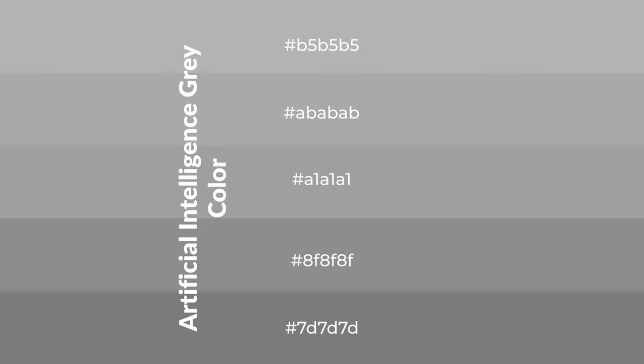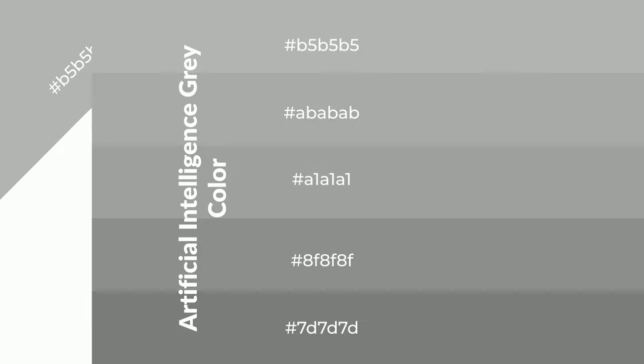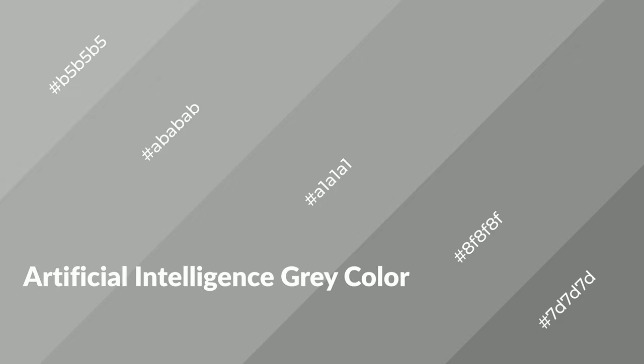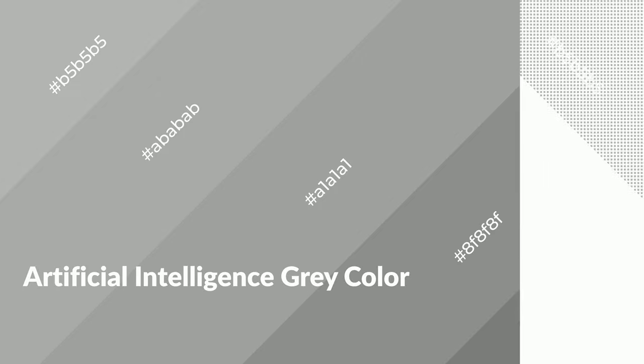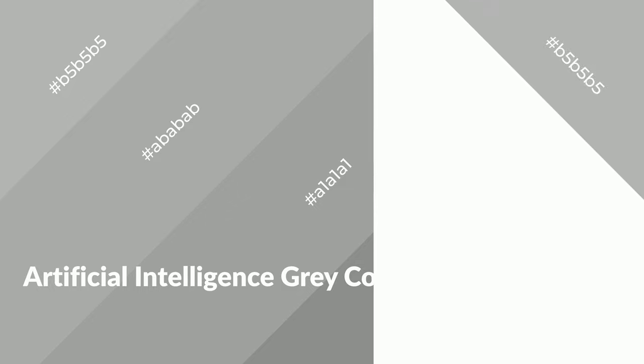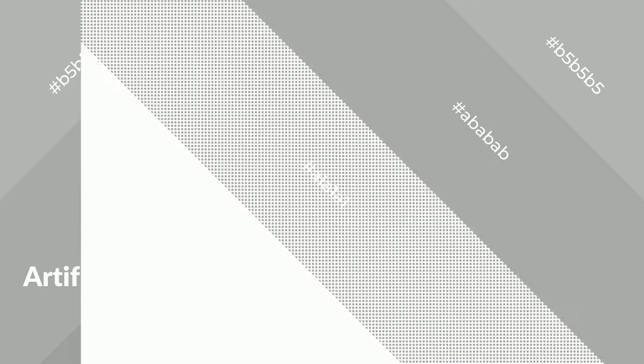To generate shades of a color, we add black to the color. Shades are used in patterns, 3D effects, and layers, and they create depth and drama. Artificial intelligence gray is a warm color and it emits cozier and active emotions. Warm colors are symbols of warmth.